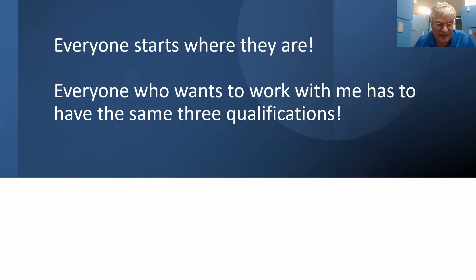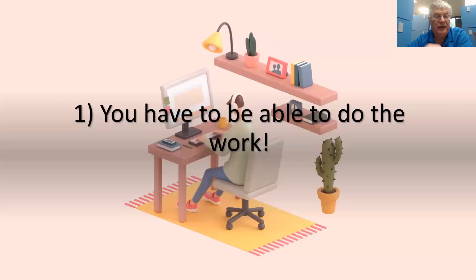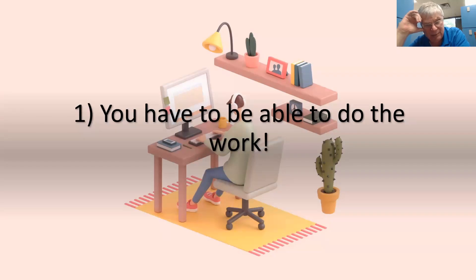Everyone who wants to work with me has to have the same three qualifications. First, you have to be able to do the work — that can mean many things: technology, health, outside interests, grandchildren, whatever. But you have to be able to do the work. The next thing is you have to want to do the work. It's best if it's inserted into your 90-day plan so you can figure out what days you're going to do things.